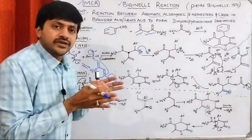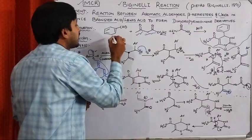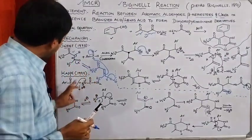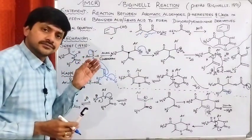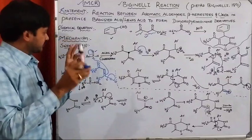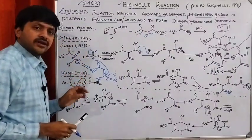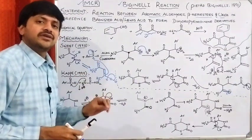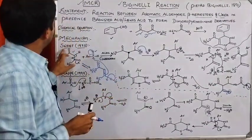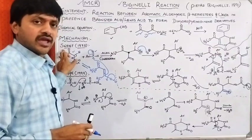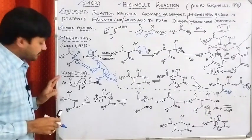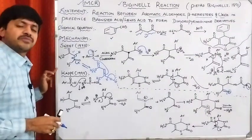According to Sweet, initially the aromatic aldehyde and the beta-ketoester react together. Till 1997, all members believed that the mechanism for the formation of dihydropyrimidinone derivatives was always according to the Sweet mechanism only. But in 1997, Kappe introduced a new mechanism, and this new mechanism superseded the Sweet mechanism.